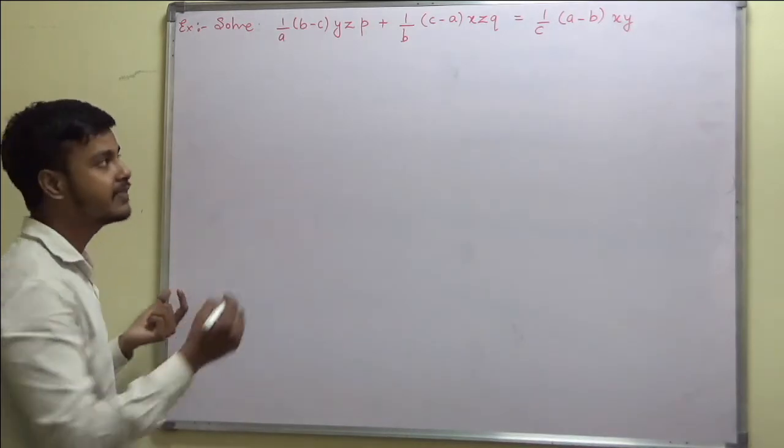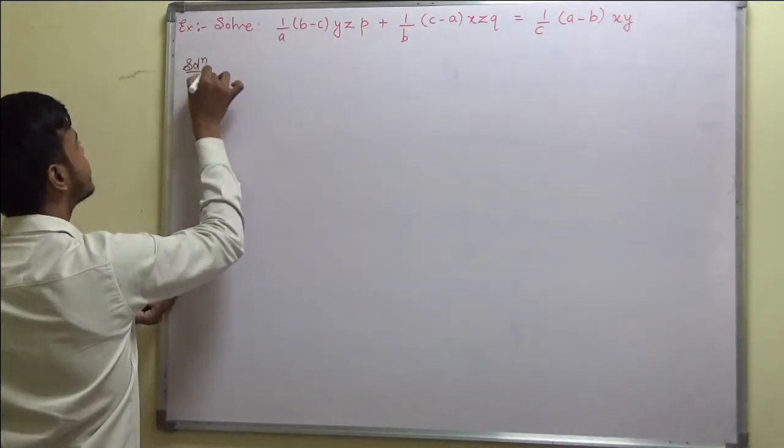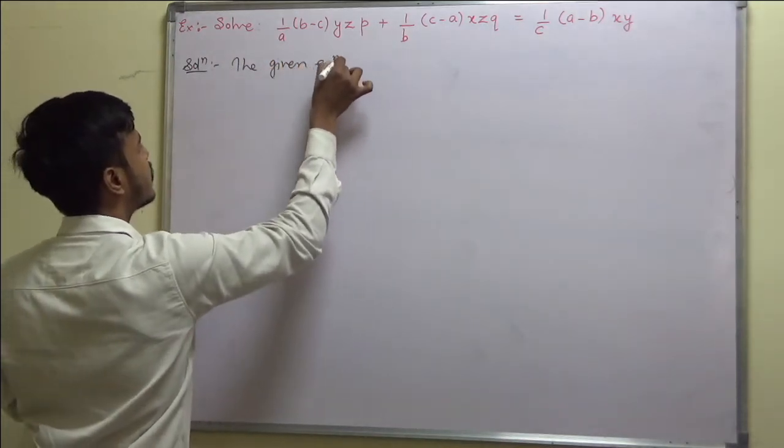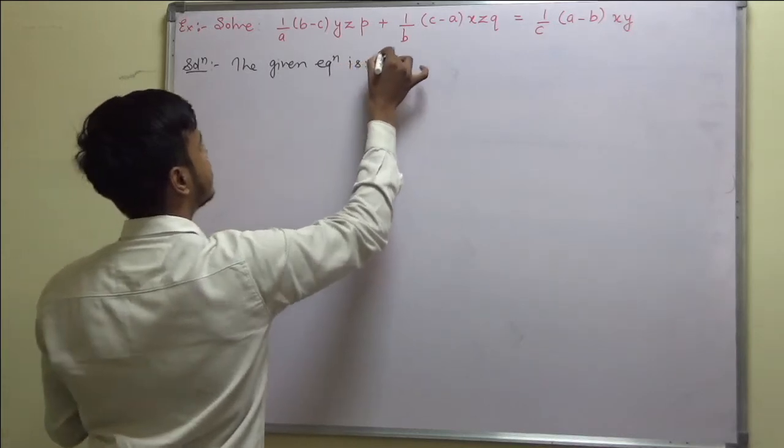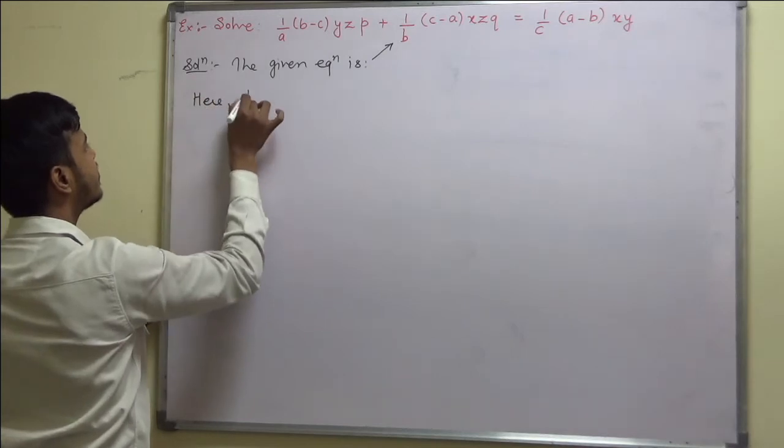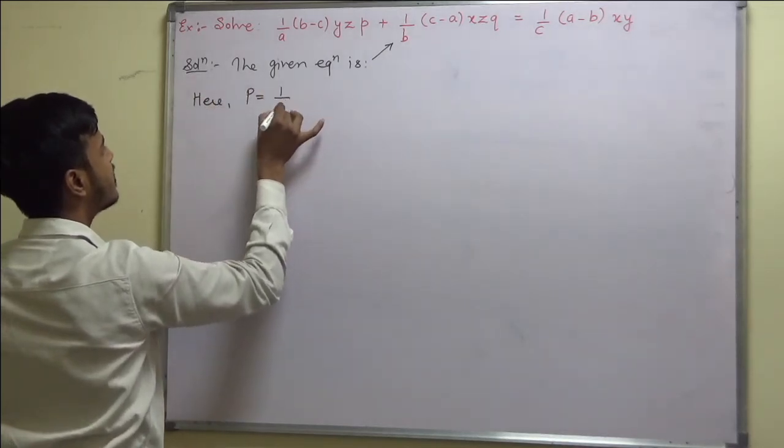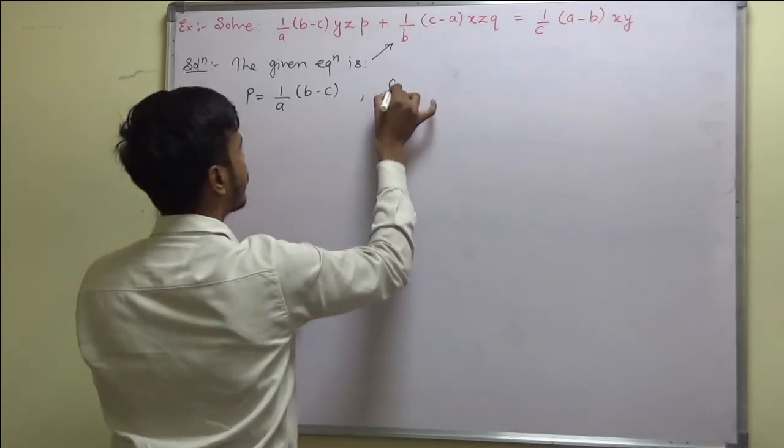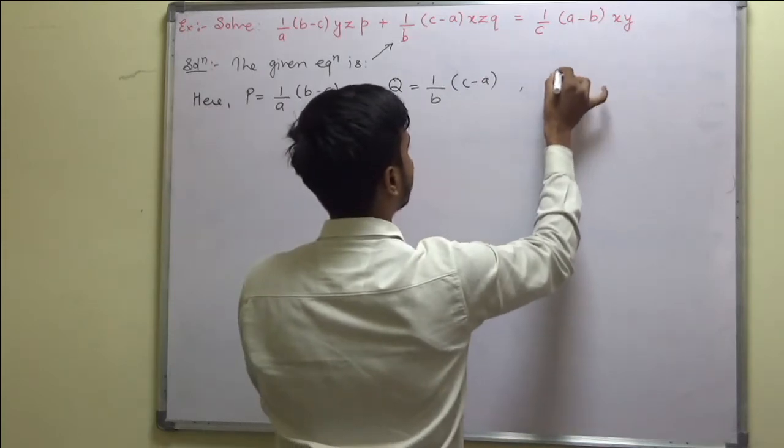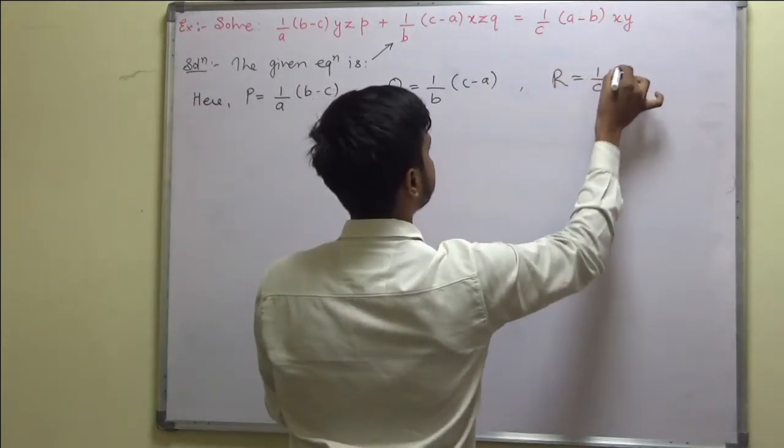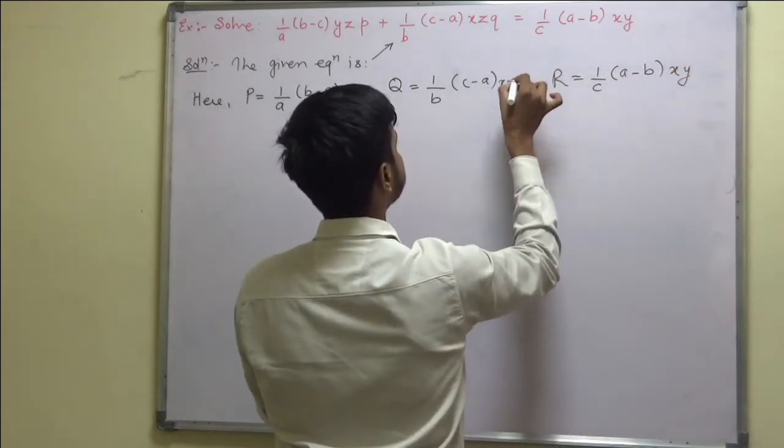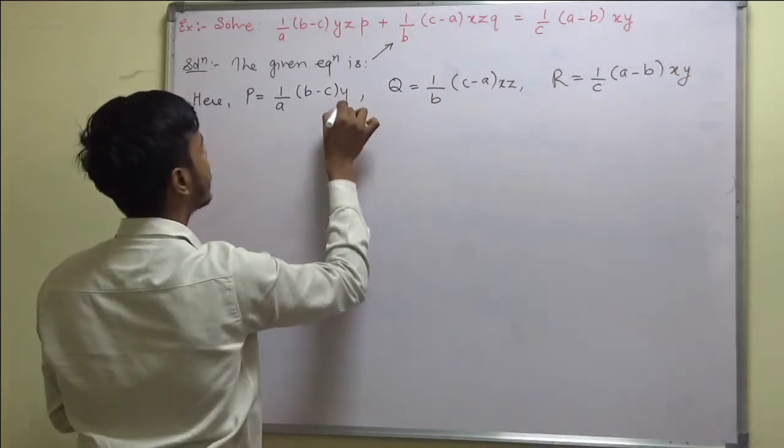Without much ado let us start. The given equation is this. Here p is equal to 1 by a into (b-c), q is 1 by b into (c-a)xz, and r is 1 by c into (a-b)xy.